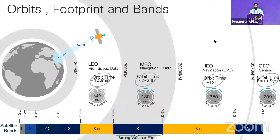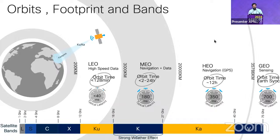To cover the entire earth, we need a lot of satellites in LEO orbit. Footprints are the view of the earth a satellite has from outer space. Frequency bands used in LEO are Ku and Ka band, operating around 12–18 GHz and 27–40 GHz respectively.